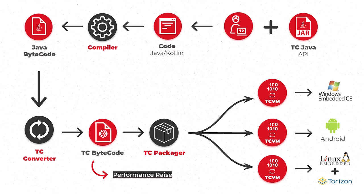We're going to talk more about performance and how we guarantee it. How does TotalCross work? As I said, we have an API — it's a Java API. You write your code in Java or Kotlin. TotalCross will convert your bytecode to our own bytecode. We don't run anything from Java on the device. The virtual machine is from TotalCross, and the bytecode is also from TotalCross.